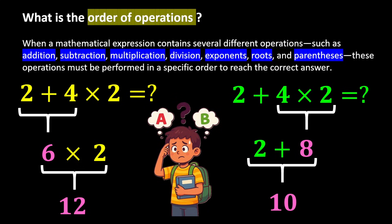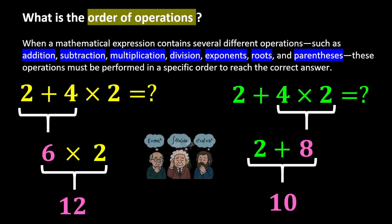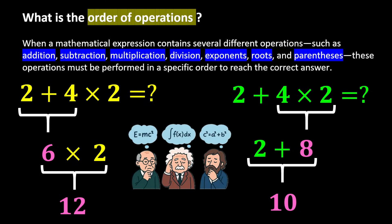This is where the order of operations becomes important. The order of operations tells us that you cannot start solving a mathematical expression from wherever you like. If everyone does whatever they want, different answers will be obtained and mathematics becomes disorganized. That is why mathematicians, to prevent confusion and disorder, agreed on a universal rule called the correct order of operations.